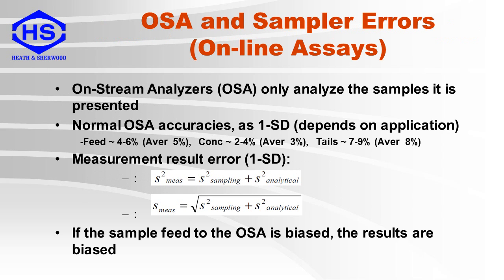On-stream analyzers only analyze the sample presented to them. The one standard deviation measurement errors of analyzers are a combination of the sampling error and the analytical error of the instrument. The measurement error can be determined by summing the square of these errors and then taking the square root of the sum. It should be noted that this sampling error is the fluctuating bias or the precision error. In addition, as the sample fed to the OSA has a constant or systematic bias, the results will also include this bias.